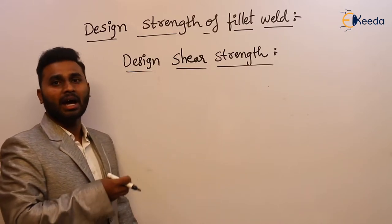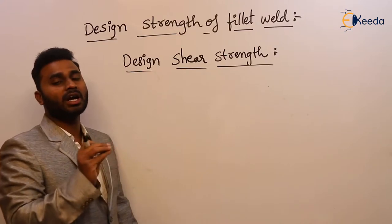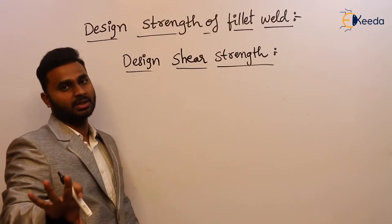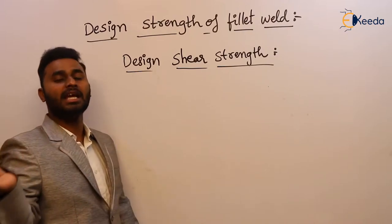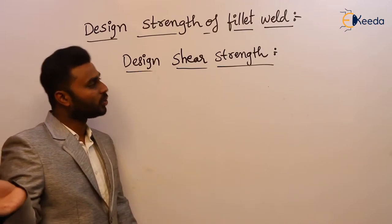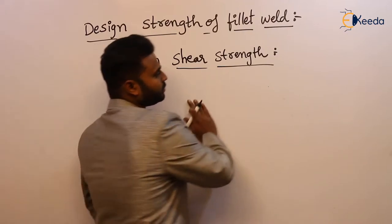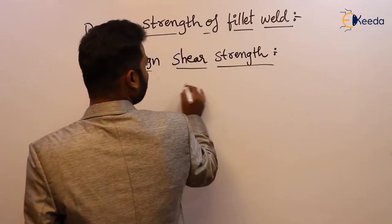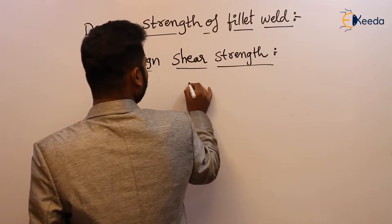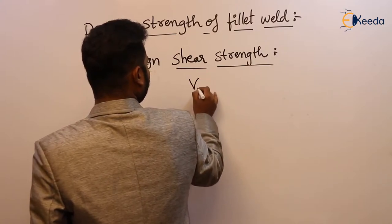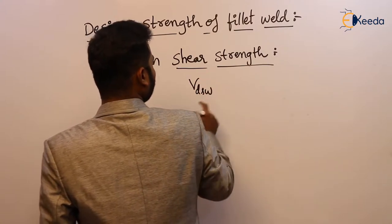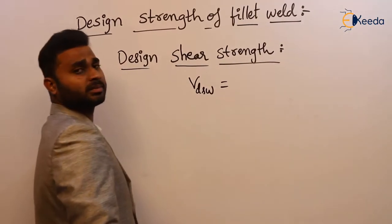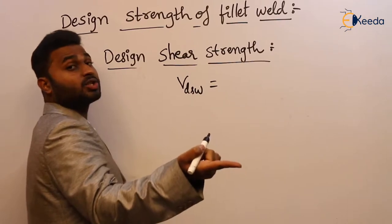But as this is a design subject, we are not supposed to take stress directly. We have to take some factors along with the stress, as the code suggests, and then multiply by the area. So design shear strength of weld is equal to — as I said — stress into area.